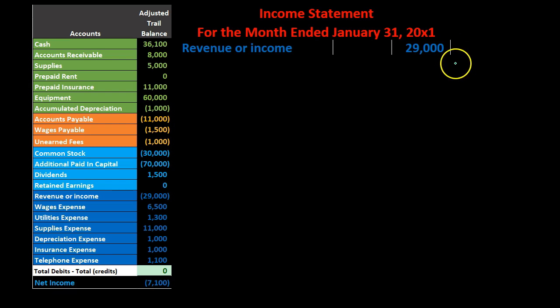We're not going to put brackets around it because it's not representing a credit — we're flipping the sign from a debit and credit format to a plus and minus format. Now we're going to bring over the expenses. A common question is what order should the expenses be in. We can keep them in the order of the trial balance, or give an order that's best for our readers — oftentimes that means putting the higher numbers first.